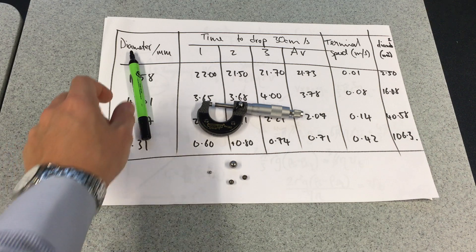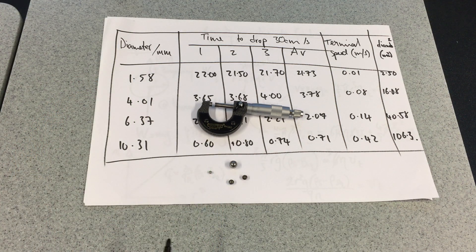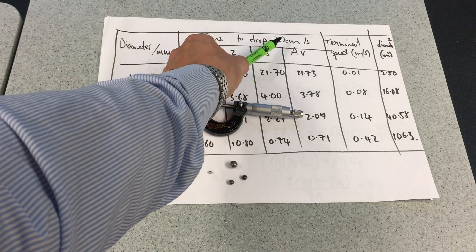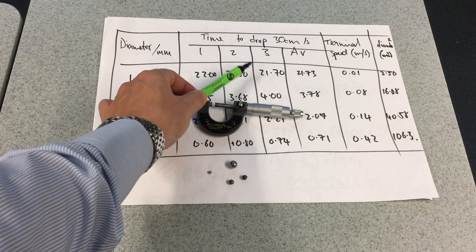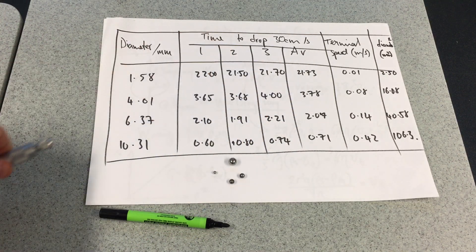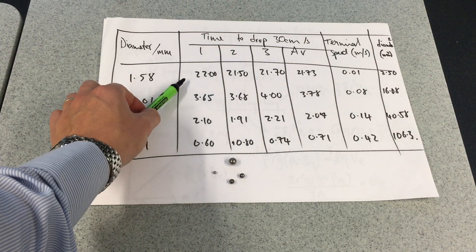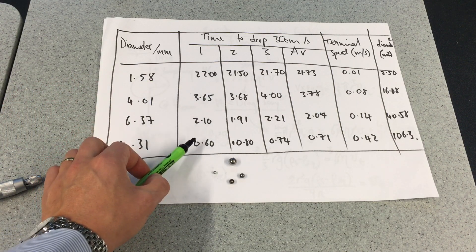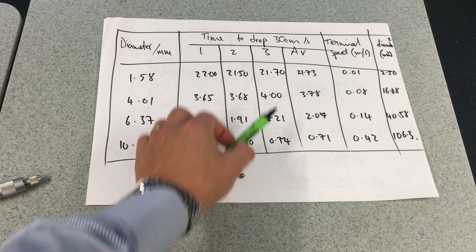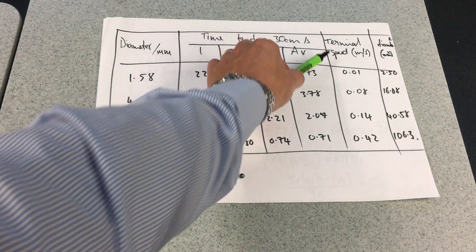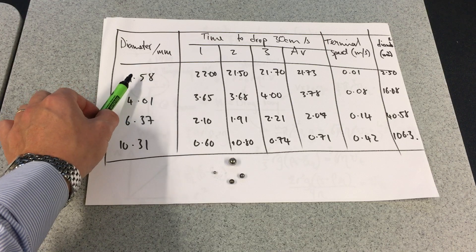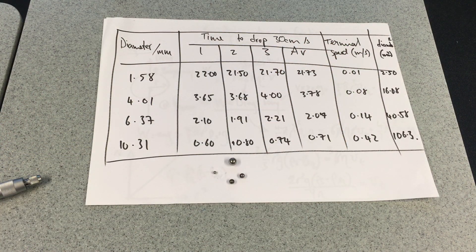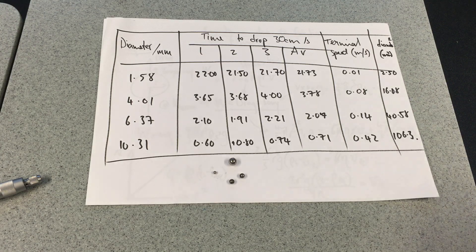That's why I've measured the diameter. I've got the time to drop, and I've measured out 30 centimeters. I've got three values. Initially they're incredibly large values for this tiny ball, and then they come down to being pretty fast values towards the bottom. Because it's 30 centimeters, I can work out my terminal velocity, and then I've taken the diameter and squared it. Feel free to take down those results whilst I show you the actual setup.